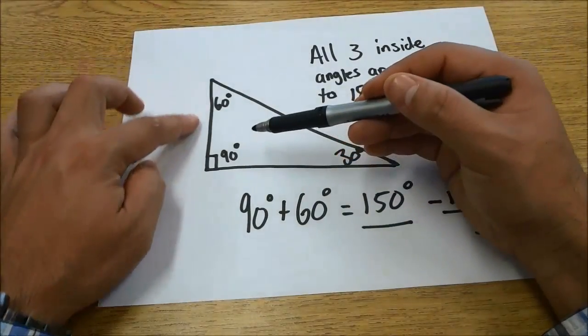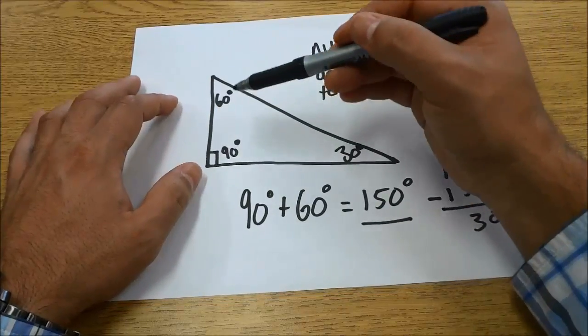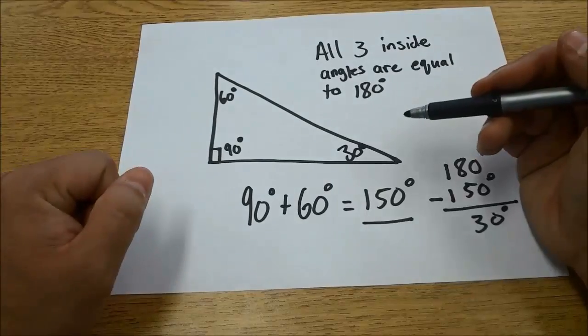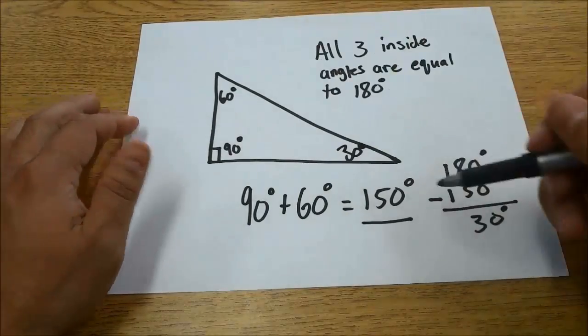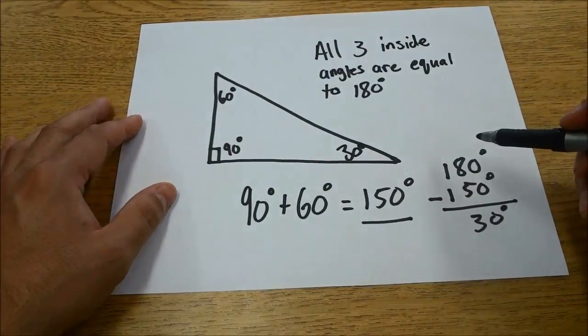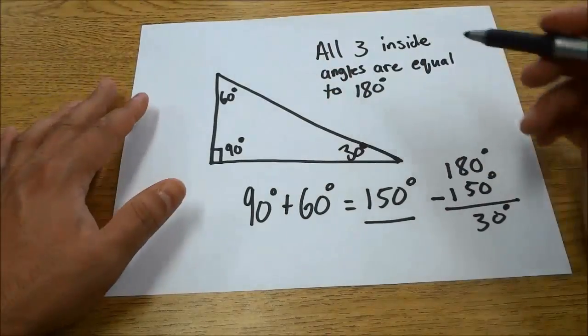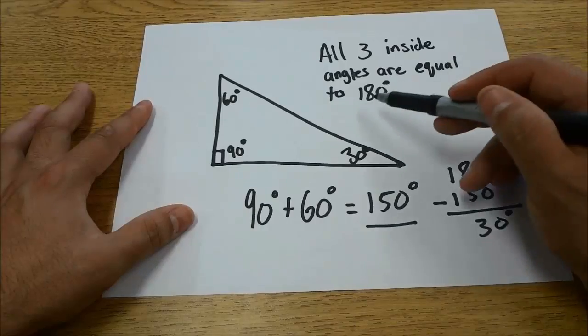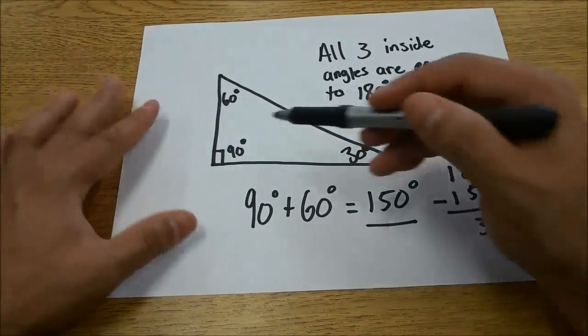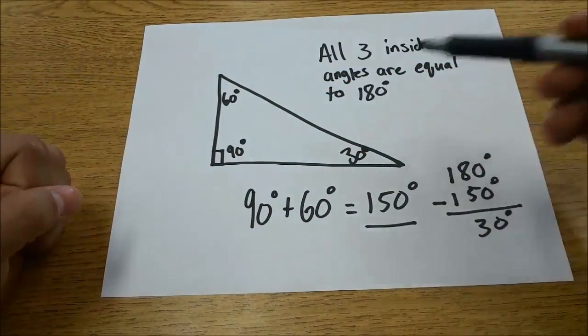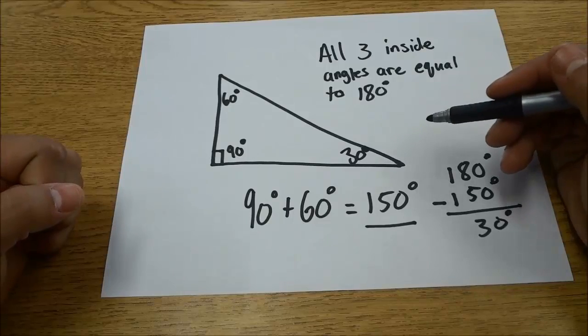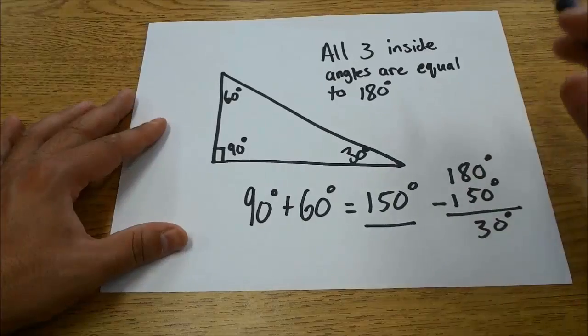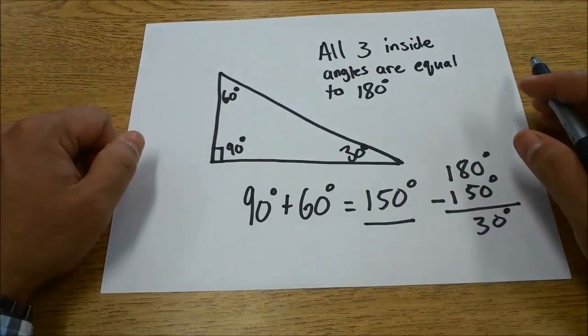Once you know two of the angles, you can add those two together and subtract that total from 180, because all three interior angles of a triangle equal 180 degrees. Just add the two angles together, subtract from 180, and you'll get the missing angle.